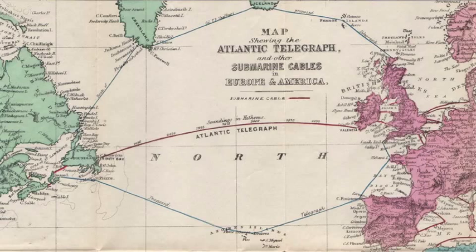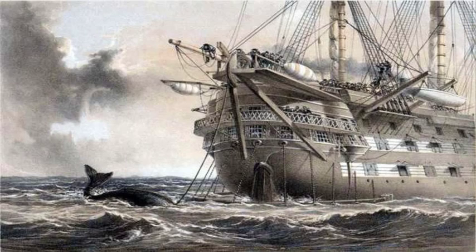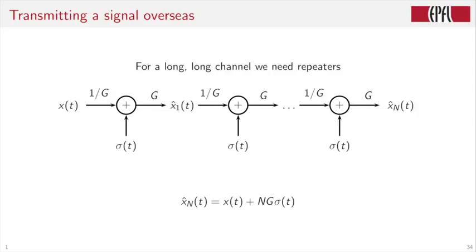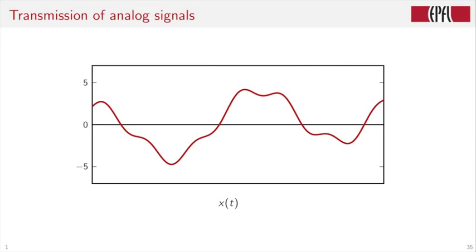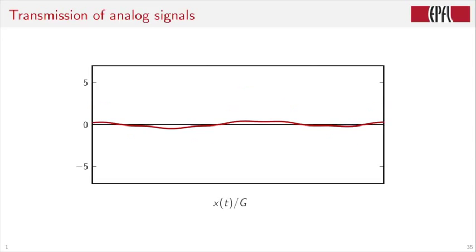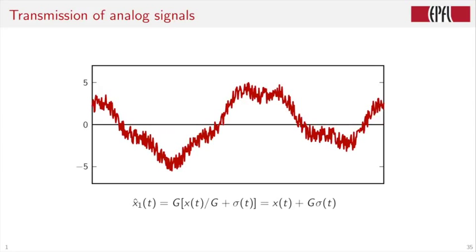This was the idea behind transatlantic cables, which were laid in the 19th century and were essentially analog devices until telegraph signals were properly encoded as digital signals. As can be seen in this picture, this was quite an adventure to lay a cable across the Atlantic and then to try to transmit analog signals across these very long distances. For a long channel, because the path loss is so big, you need to put repeaters. So the process we have just seen would be repeated capital N times. Each time the path loss would be compensated, but the noise will be amplified by a factor of N.